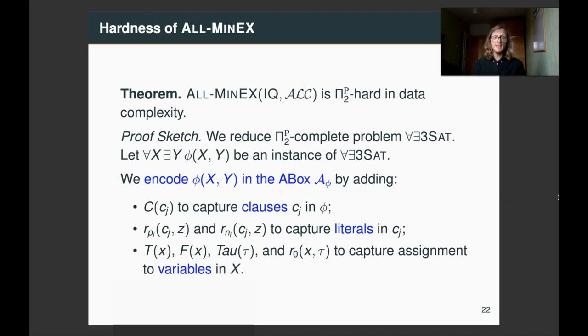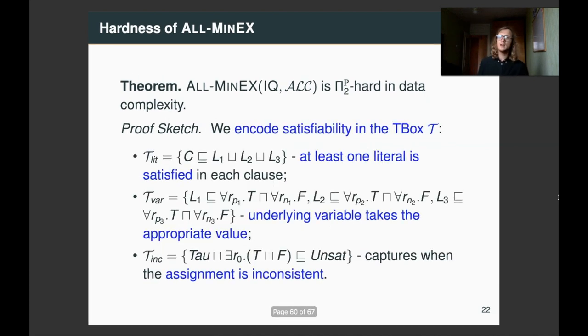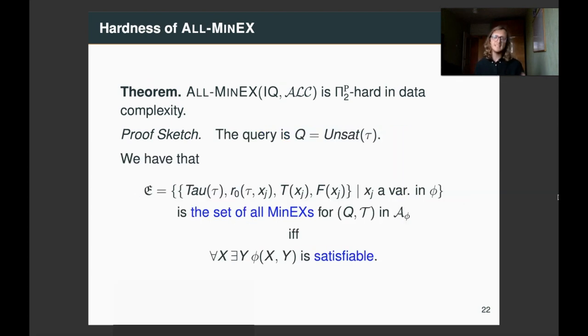So, we can capture φ in the A-box. That is, we capture clauses as concept assertions, and we capture literals in these clauses as role assertions, and we have some extra assertions to capture assignments to variables in x. Then, we capture satisfiability in the T-box. That is, one axiom captures that at least one literal is satisfied in each clause. Some other axioms, given that the literal is satisfied, ensure that the underlying variable takes the appropriate value. And another axiom captures when the assignment is inconsistent, that is, triggers unsat. And we take the query to ask whether unsat is triggered.